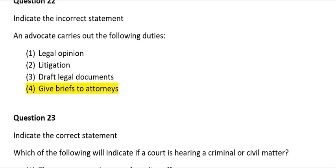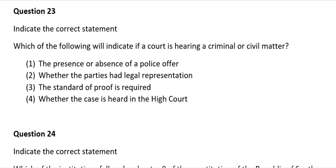Question 23: Indicate the correct statement. Which of the following would indicate if a court is hearing a criminal or civil matter? 1) The presence or absence of a police officer; 2) Whether the parties had legal representation; 3) Standard of proof required; 4) Whether the case is heard in the higher courts. The correct answer is number 3: the standard of proof required.